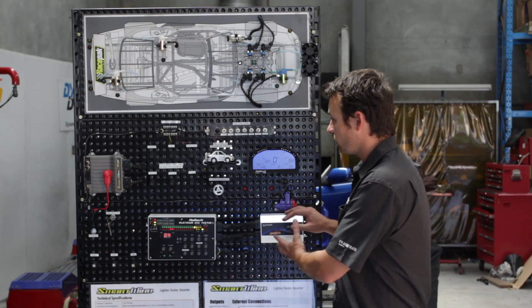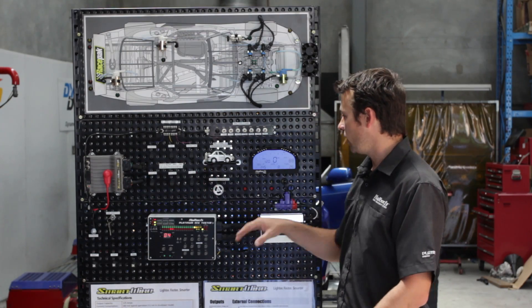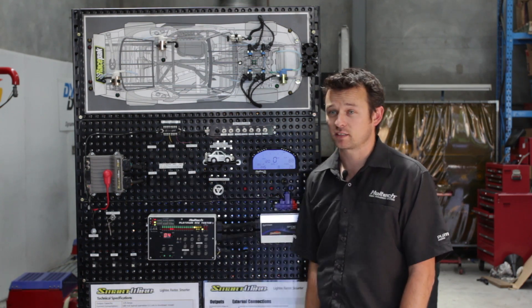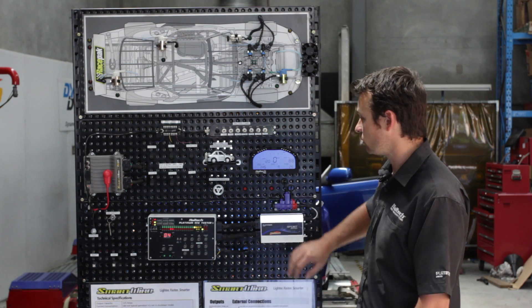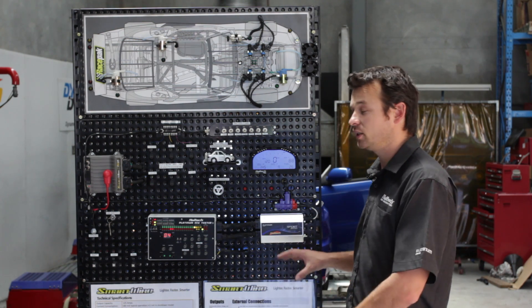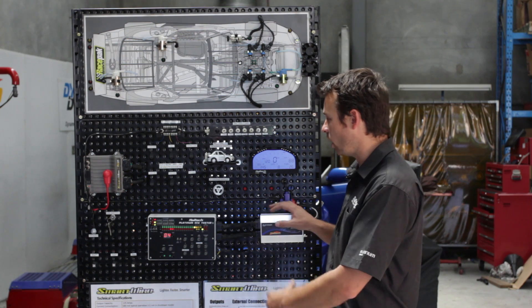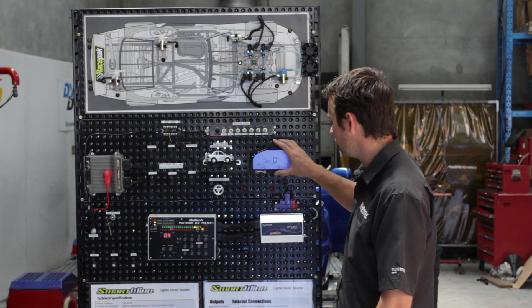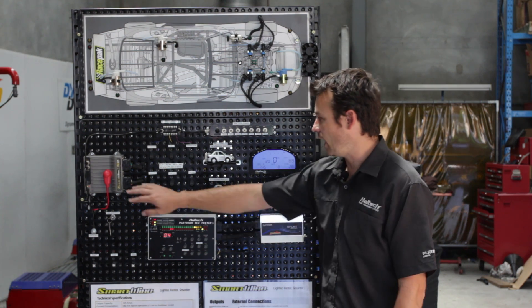All of the channels that come through the ECU and the SmartWire can be logged in the dash. So you can log steering angle, if you had GPS going in there you can log that as well, plus all the information from the Haltech ECU, and that all gets transmitted over this CAN network which is essentially a single wire that goes between the dash, ECU and the SmartWire.